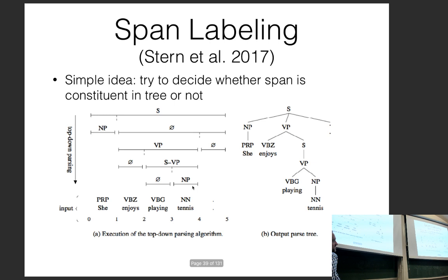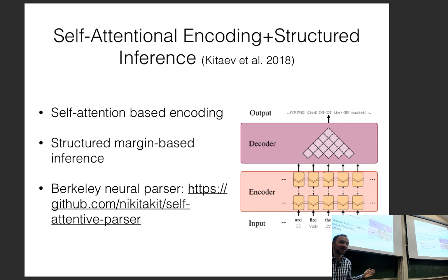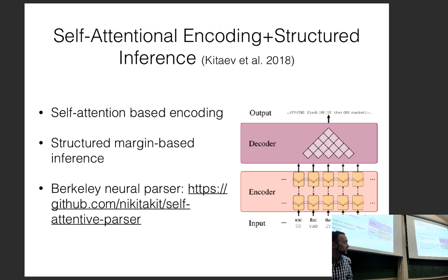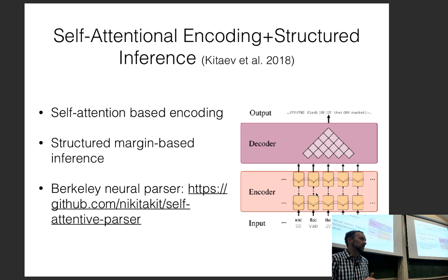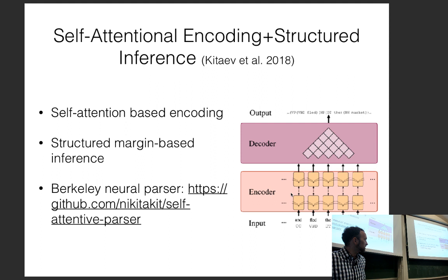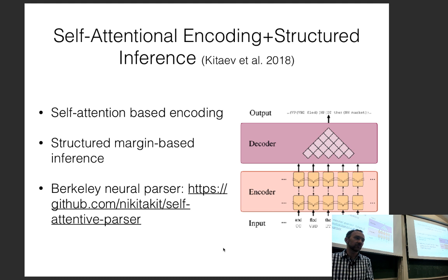Moving to state-of-the-art phrase structure parsing — primarily work from UC Berkeley — the current best approach uses a self-attentional encoder (standard transformer) plus a CRF-style decoder. They have techniques to convert self-attentional encodings into quantities suitable for calculating span probabilities. This parser is recommended for computing English phrase structure parses, and while it is highly effective, the underlying idea is not fundamentally different from the CKY or hypergraph search algorithm described here.